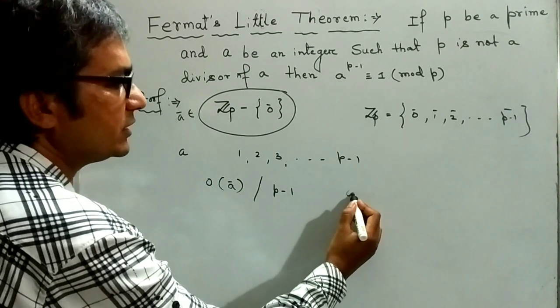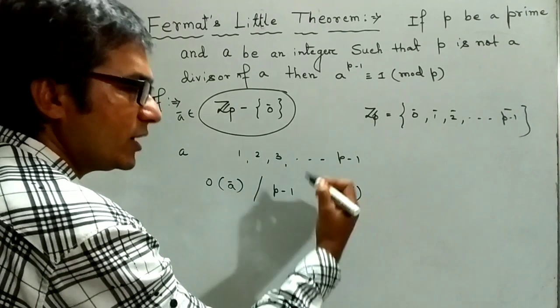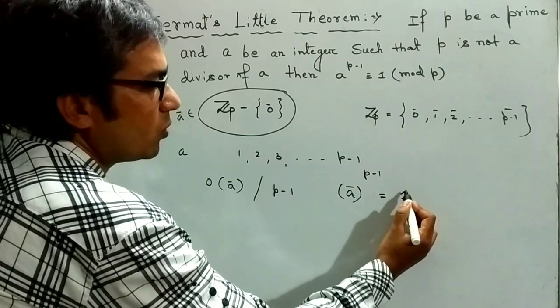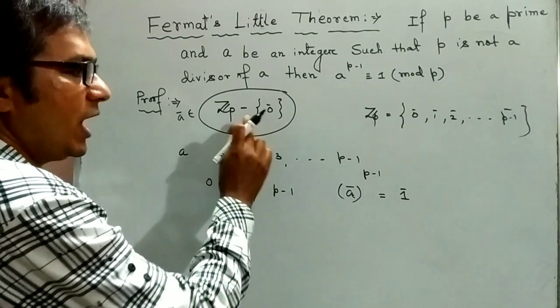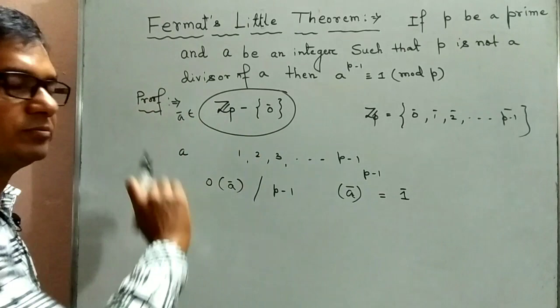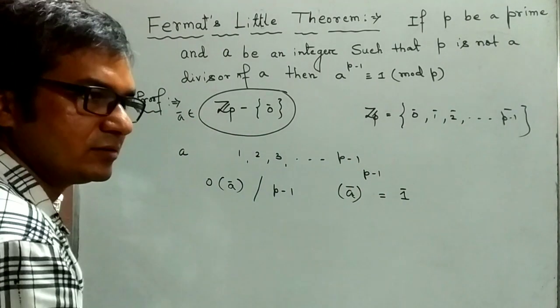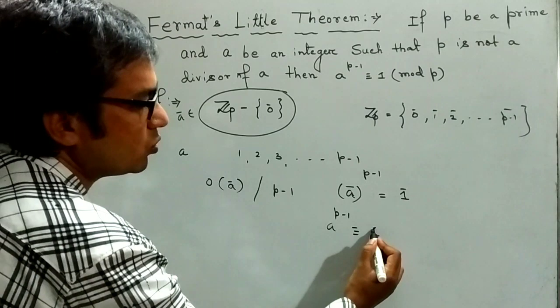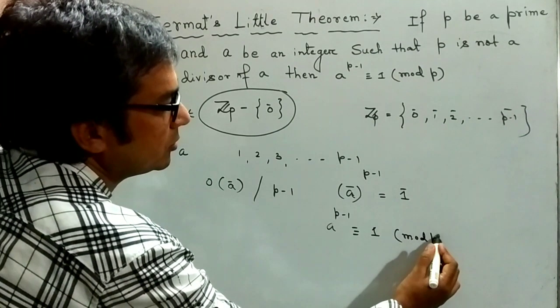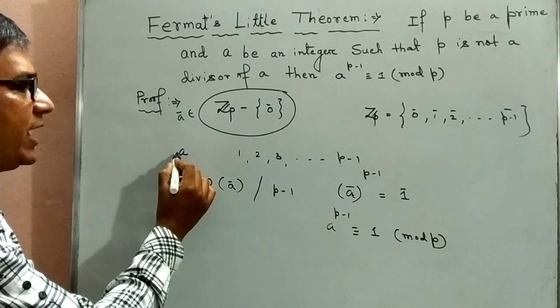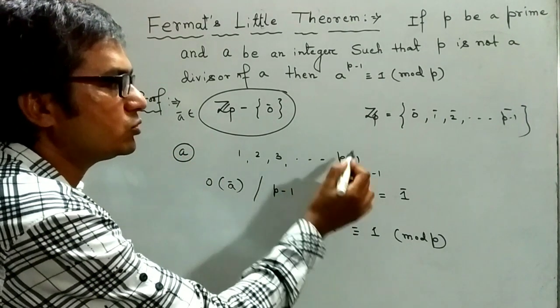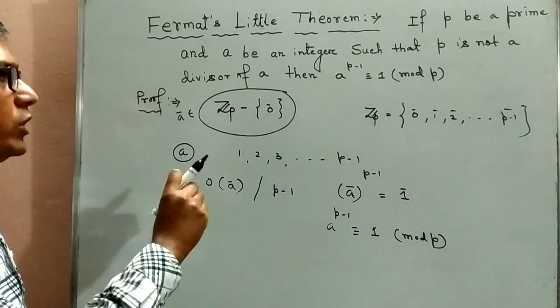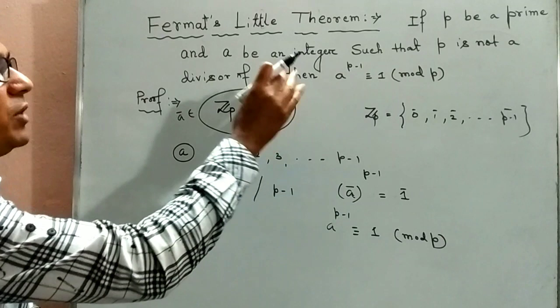So we can write a class to the power p minus 1 is equal to 1 class. Because one class is the identity of the group. And this relation gives a to the power p minus 1 congruence to 1 mod p. So if a be any one of 1, 2, 3 to p minus 1, then the proof is very easy. So in the first case, we prove Fermat's little theorem.